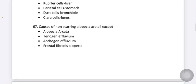Causes of non-scarring alopecia are all except. Options are alopecia areata, telogen effluvium, androgen effluvium, frontal fibrosing alopecia. Here the answer is frontal fibrosing alopecia.